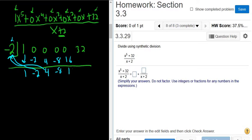Multiply, you get 16. Add, you get 16. Multiply, you get negative 32. And you get a remainder of 0.